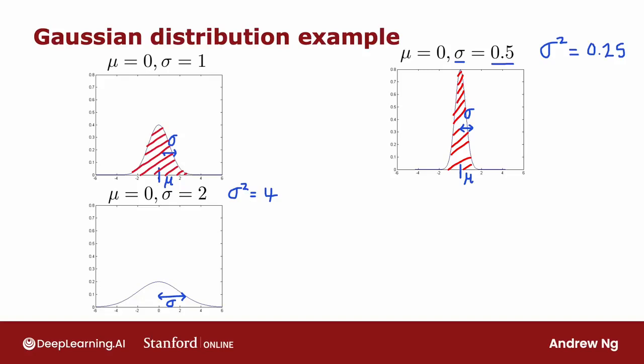Finally, let's try changing the mean parameter mu, and I'll leave sigma equals 0.5. In this case, the center of the distribution, mu, moves over here to the right, but the width of the distribution is the same as the one on top because the standard deviation is 0.5 in both cases. So this is how different choices of mu and sigma affect the Gaussian distribution.